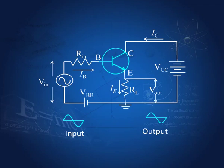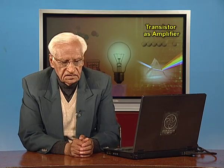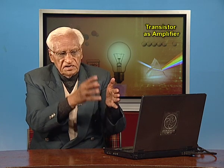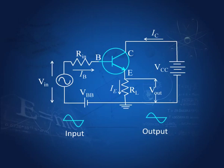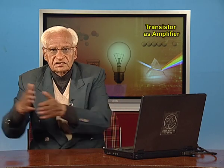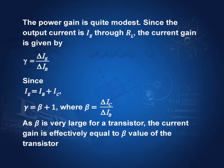This has a high input impedance and low output impedance, so it can be used for matching impedances for the efficient transfer of power from the active device to an external device. The voltage gain is not much — it is of the order of unity — and the main use is impedance matching between the active device and the external device. The power gain in this case is modest because the voltage gain is very little.